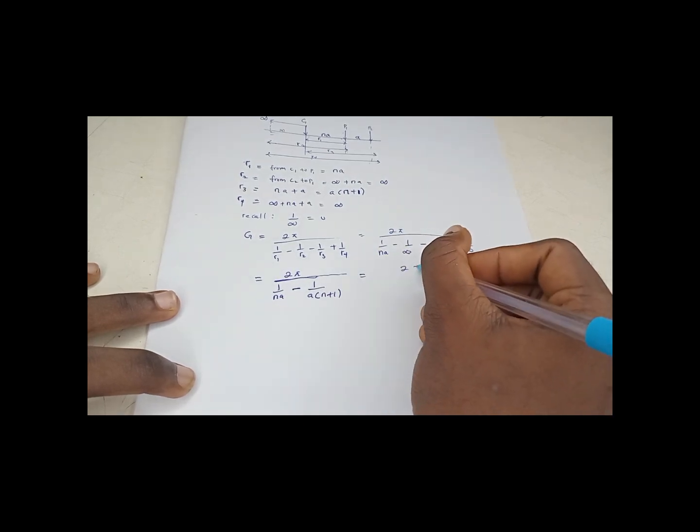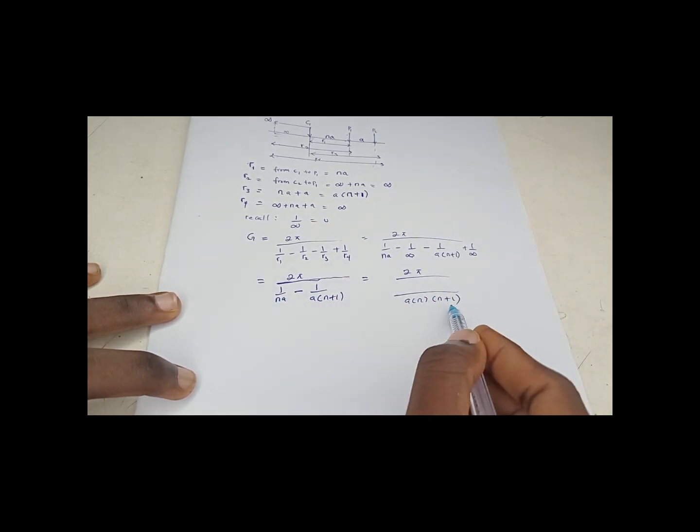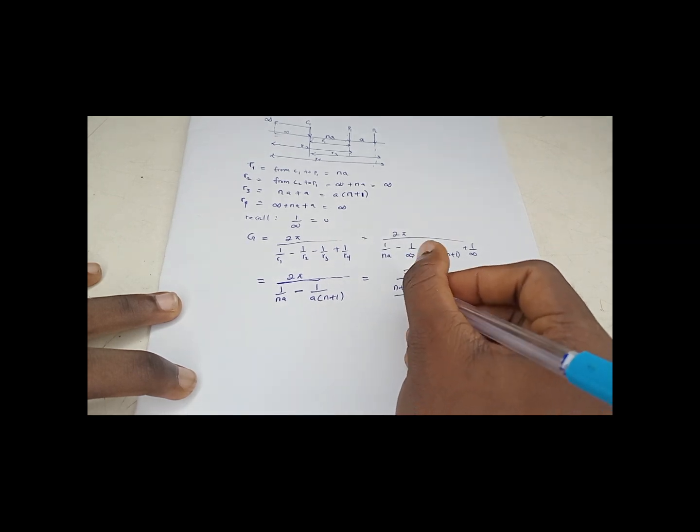So we'll find the LCM. We'll have 2π over - so what's the LCM? So that is A times N times (N plus 1). N times A in this, you have N plus 1. N plus 1 as well is N plus 1.